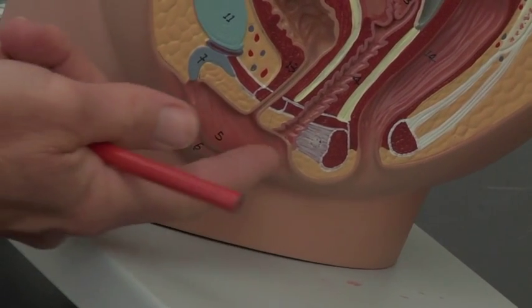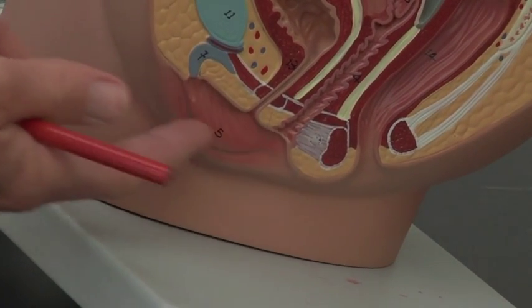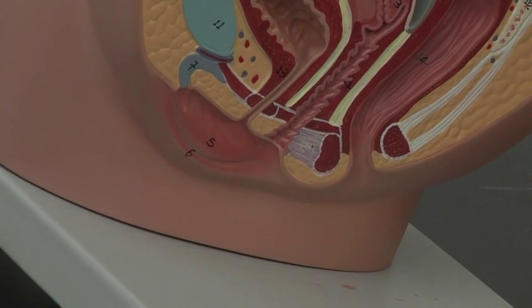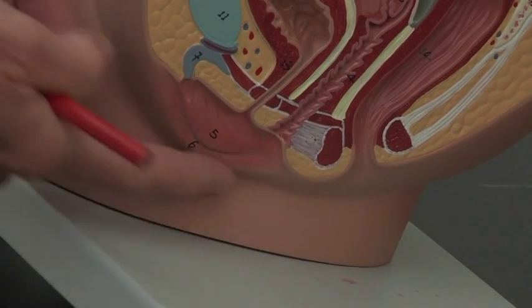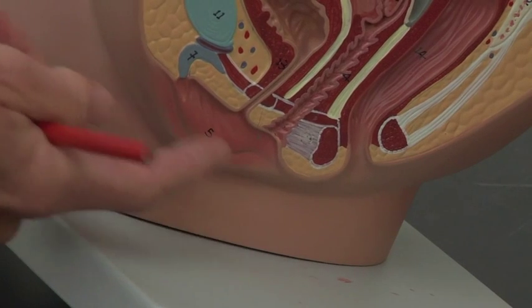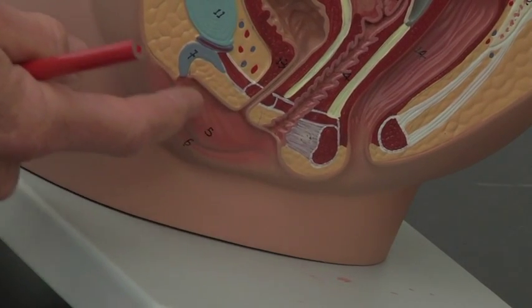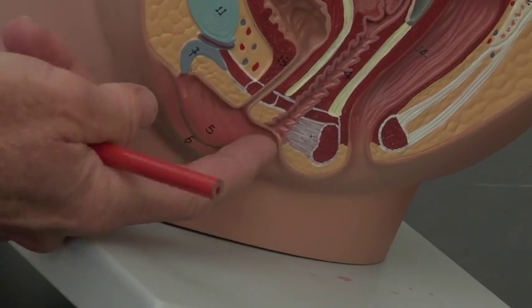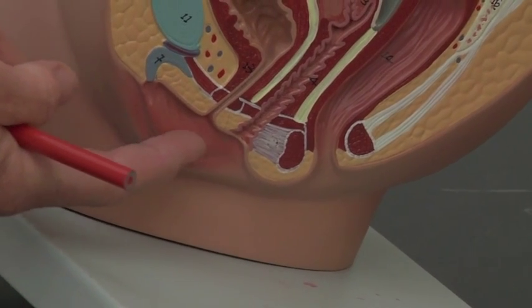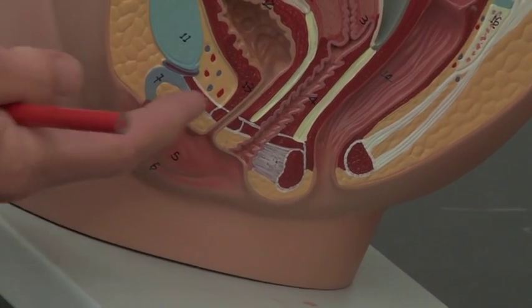Inside the labia majora you have another set of lips known as the labia minora. You have the labia majora which taper down from the mons pubis and then you have the labia minora. The labia minora or these minor lips actually taper up and they form this little hood.